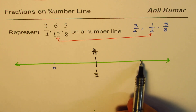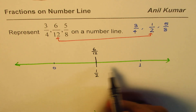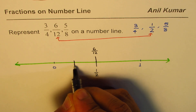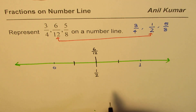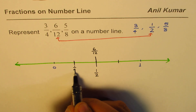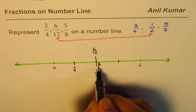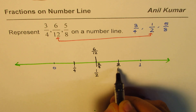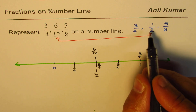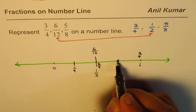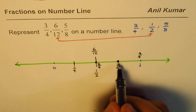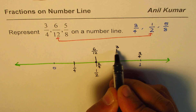To get 3/4 we have to divide the segment from 0 to 1 into 4 equal parts. Half of half gives us one quarter. So we have 1/4, 2/4 (which is half), 3/4, and 4/4. Since we need to represent 3/4, I'll make a circle there. So we have represented two points: 6/12 and 3/4.